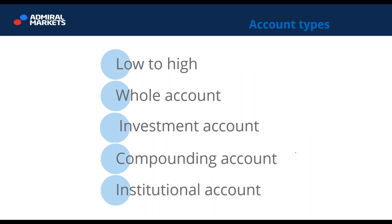Account types include low-to-high accounts — smaller accounts you want to build up. A whole account is where you made an initial deposit, say 30,000 euros, which is typically your savings, and you trade that account and withdraw profits to buy a car or other things. With a whole account, you don't want to deposit any more. An investment account is different — if you want to use your account like savings for retirement, that requires a totally different money management strategy with 0.1% risk per trade, trading for the next 10 or 20 years.